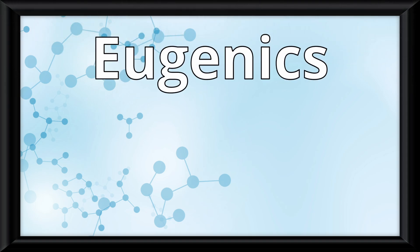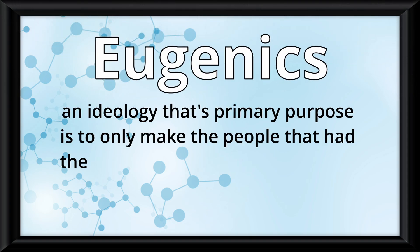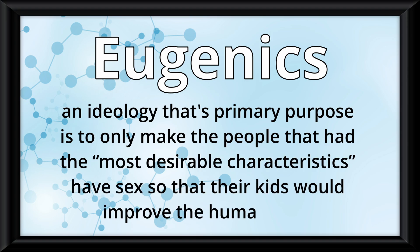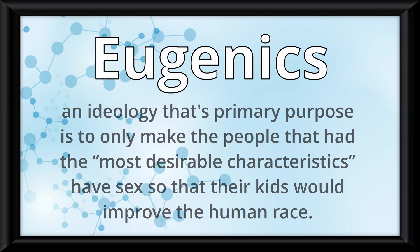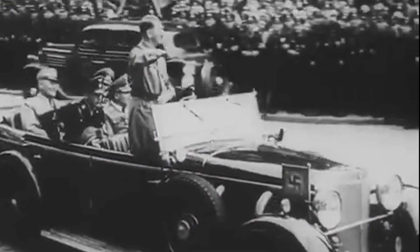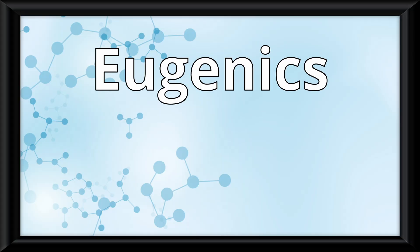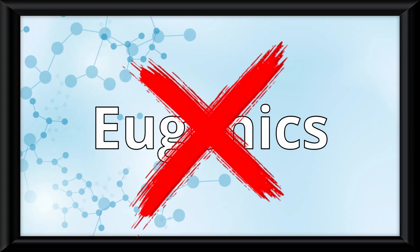Eugenics is a prime example of this. This is an ideology whose primary purpose is to only allow people with the most desirable characteristics to reproduce so that their children would have the most desirable characteristics and improve the human race. This was used as justification in World War II by the Nazis to discriminate against Jews. Later, eugenics as a whole was discredited as unscientific.